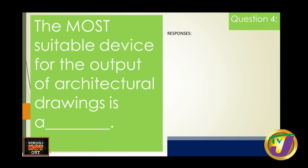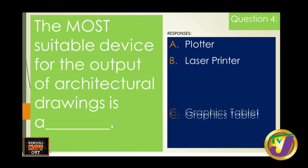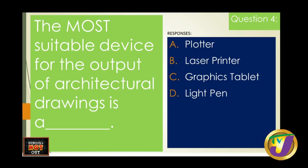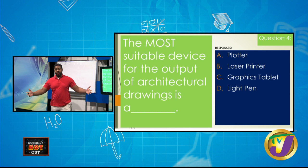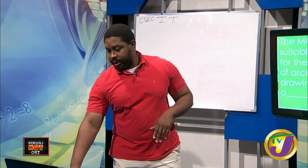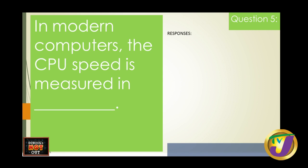Please make sure you study operating systems. Question four: the most suitable device for output of architectural drawings is A) plotter, B) laser printer, C) graphics tablet, or D) light pen. Graphics tablet and light pen are input devices, so those are eliminated. Laser printers are too small for large architectural drawings. Plotters are used for large drawings — some of the banners on billboards are printed using plotters — and a plotter can be five or six feet in length.